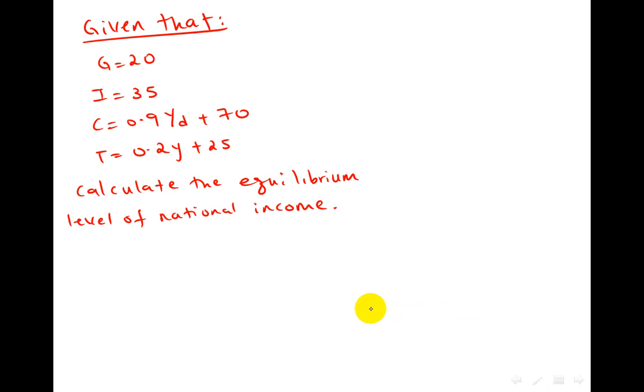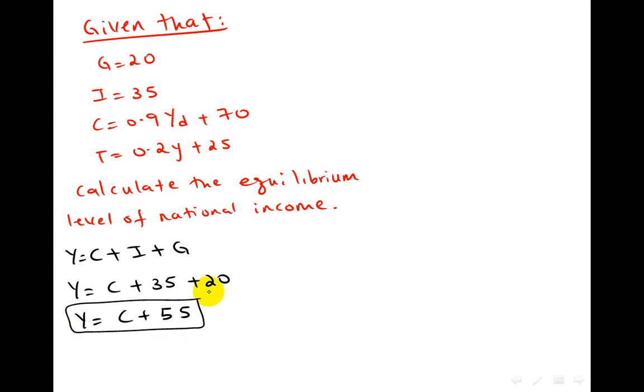So once we start solving this, first let's go to our formula that says Y equals C plus I plus G. Plug in the value of I and G from here. Y equals C plus 55. So here you have this formula, we'll get back to it later.